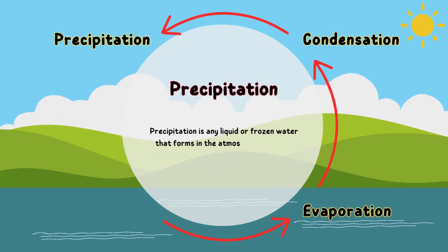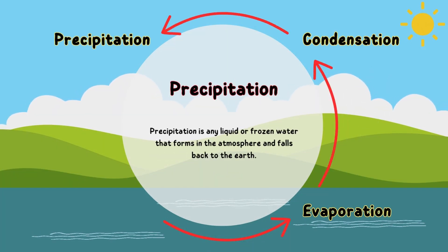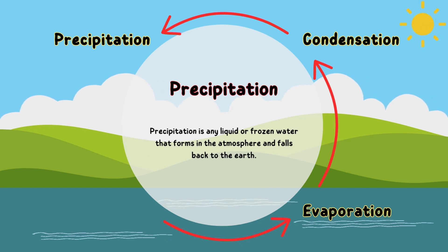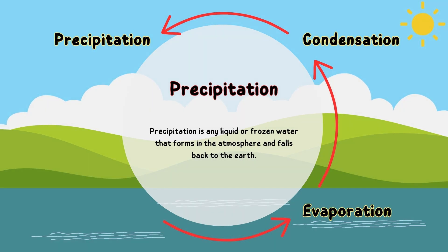Precipitation. Precipitation is any liquid or frozen water that forms in the atmosphere and falls back to the Earth.